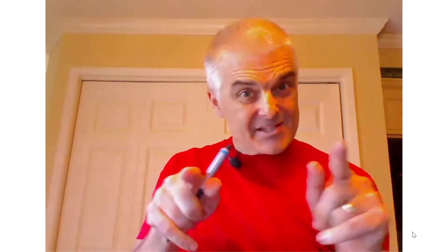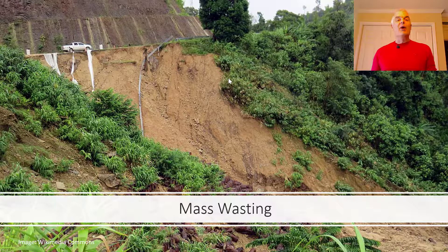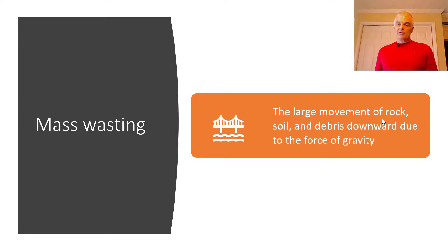Now we're almost done with our unit on weathering, erosion, and mass wasting. Doesn't that sound like a weird term? Mass wasting — what the heck is that? Well, mass wasting has to do with the more dramatic events in the world of weathering. This is where the mass is wasted, it breaks down. These are the large movement of rock, soil, and debris downward due to gravity.